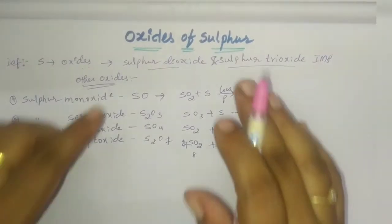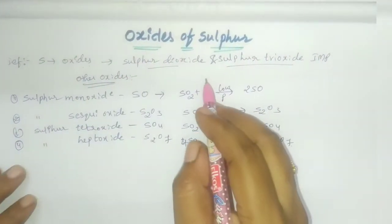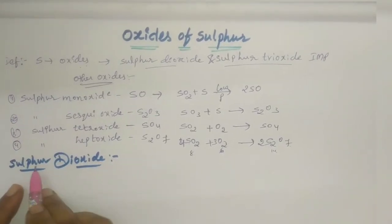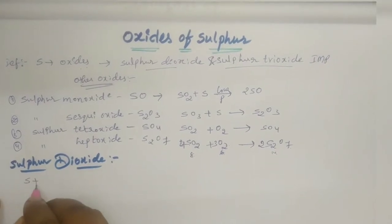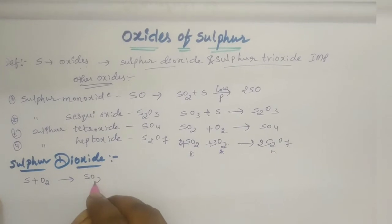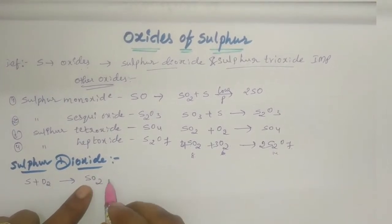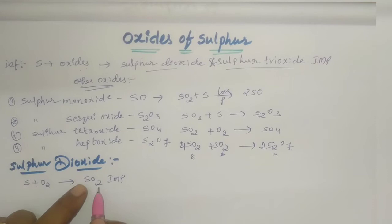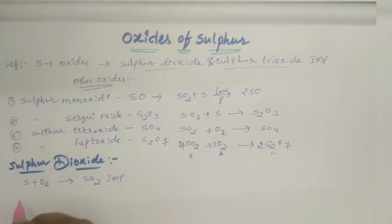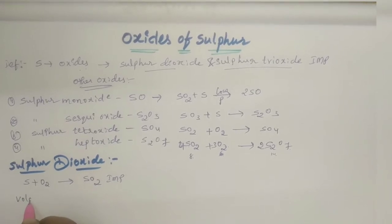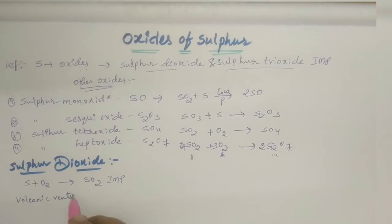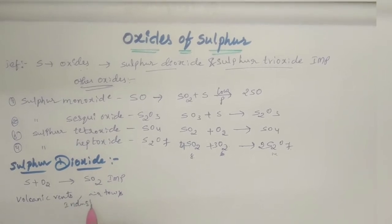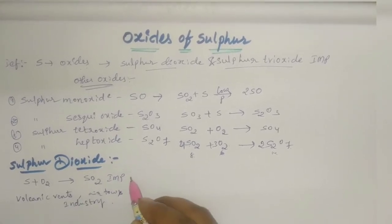This is about other oxides. Coming to our main topic, sulfur dioxide. What is the structure of sulfur dioxide? Preparation of sulfur directly combined with O2 forms SO2. This oxide is very important. We find it at volcanoes, volcanic vents, and in industry gases.